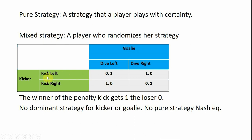For example, a kick left and a dive left means the goalie stopped the ball going into the net — we assign the goalie one and the kicker zero. On the other hand, a kick left and a dive right means the goal scores — we assign the kicker one point and the goalie zero. Likewise, a kick right and a dive left means the goal is scored: kicker gets one, goalie zero. And in this last cell, the goalie stops the ball by guessing right — when the kick goes right, the goalie dives right.